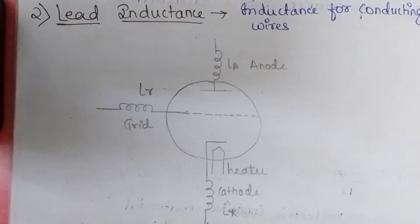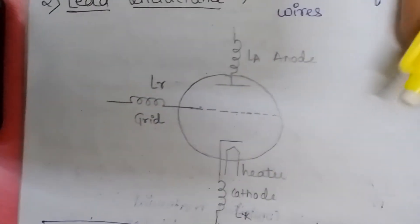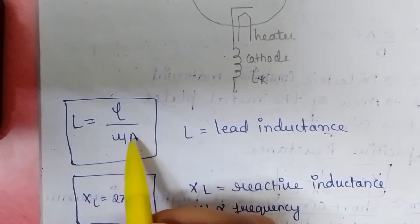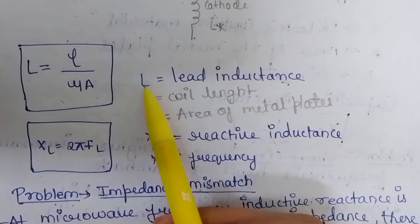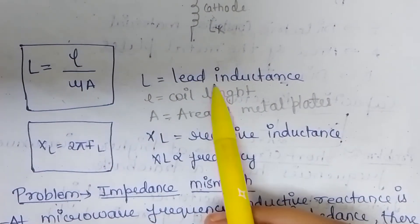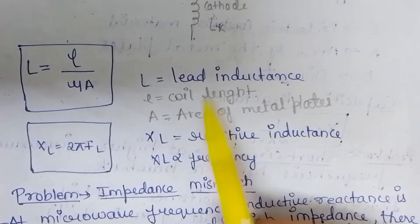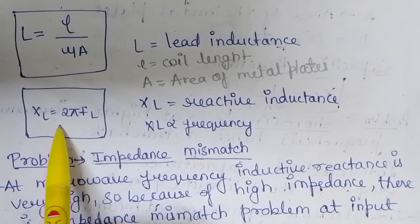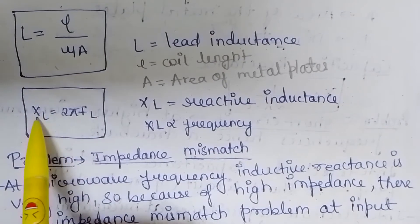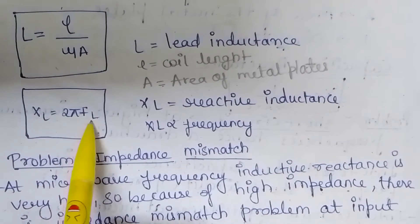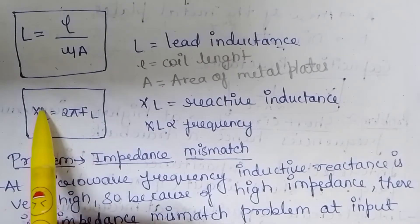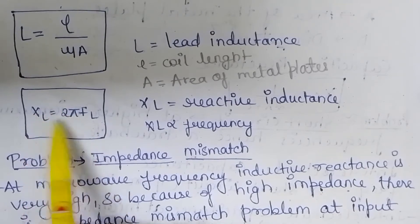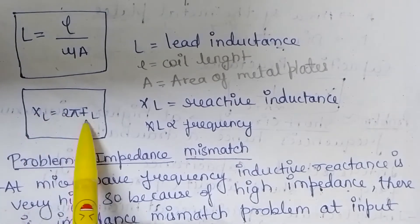Now the lead inductance can be calculated by L = l / (μ·A), where L represents the lead inductance, small l represents the coil length, and A represents the area of the metal plates. The reactive inductance can be calculated using X_L = 2πfL, where X_L is the reactive inductance and f is the frequency.